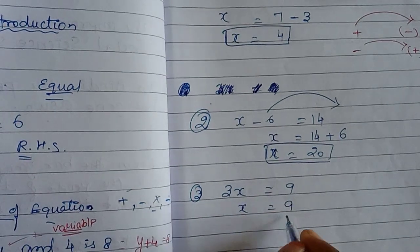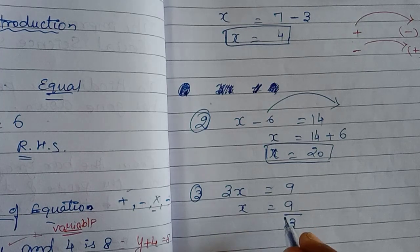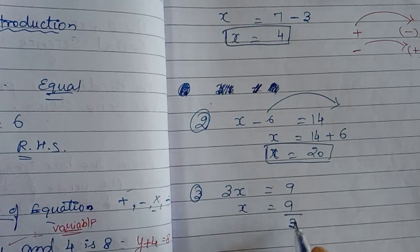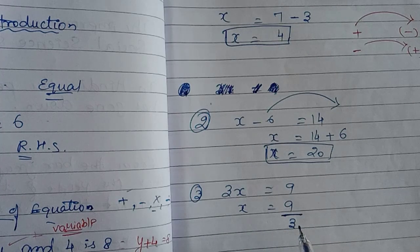If you have a multiplication, you will get a division when you transpose. If you have a division, you will get a multiplication. If you have a fraction, you divide. These are the transposing rules for multiplication and division.